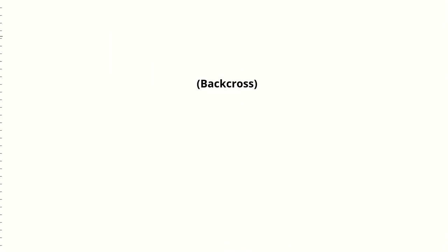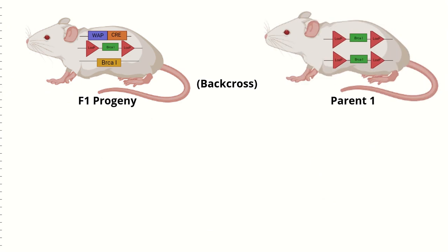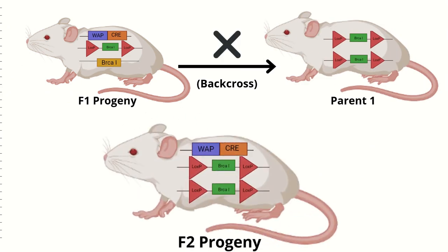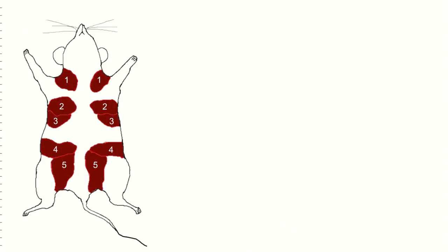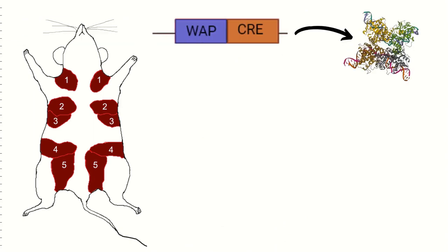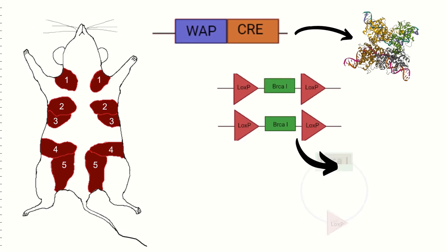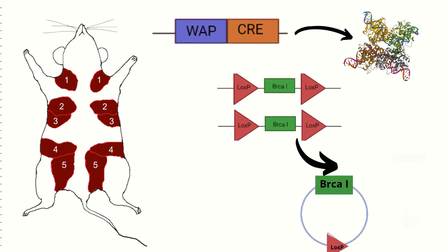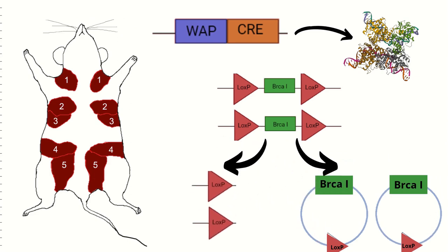In such a case, we carry out a backcross of the progeny with parent 1. The F2 progeny resulting from this mating will be homozygous for the LOX P-flanked BRCA1 gene — this is the transgenic mouse with tissue-specifically, conditionally knocked-out BRCA1. The role of tissue-specific promoter WAP is of major significance here: WAP will only be transcribed in mammary tissues, resulting in Cre recombinase being produced only in mammary cells, causing those cells to lose BRCA1 function and leading to development of tumors.